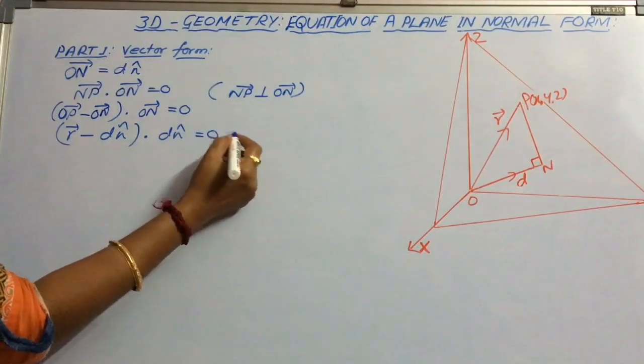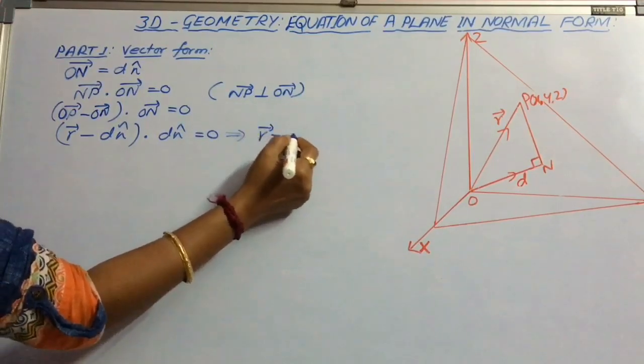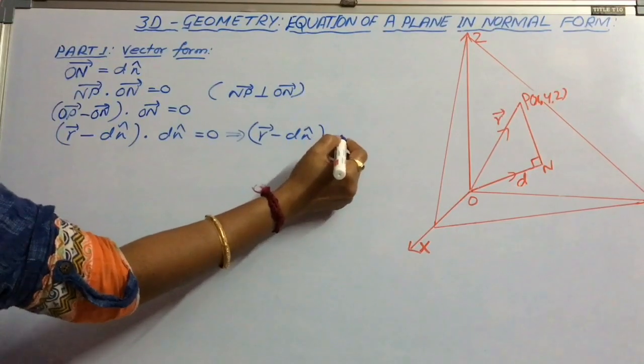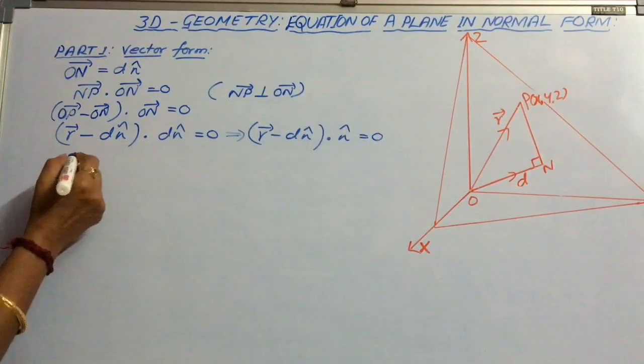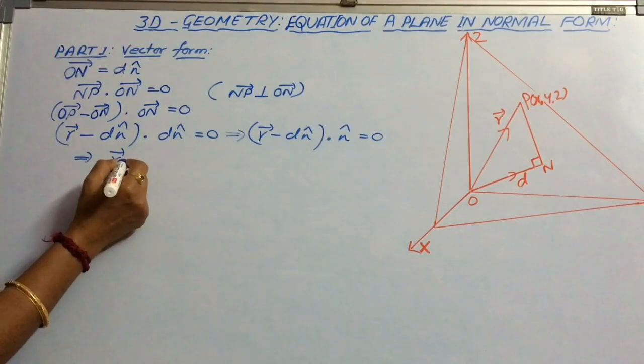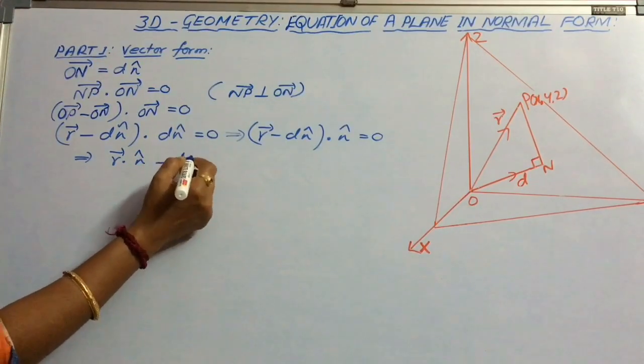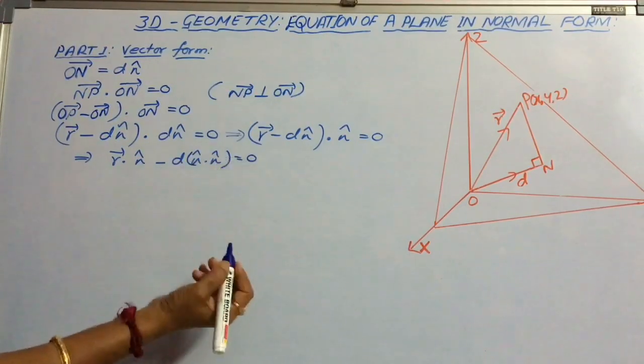This can also be written as r minus D n cap dot product with vector n equal to 0. That is, vector r dot n cap minus D times n cap dot n cap equal to 0.